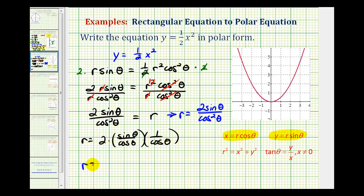We can say r is equal to two times, well sine theta over cosine theta is equal to tangent theta. And one over cosine theta is equal to secant theta. So these two equations are equivalent, and both represent a polar equation for y equals one-half x squared. I hope you found this helpful.